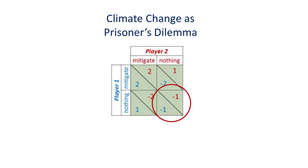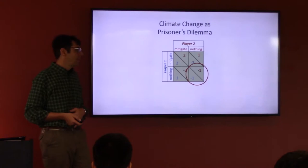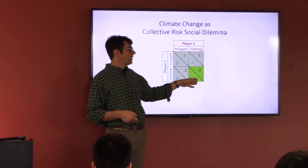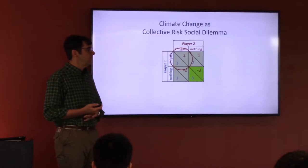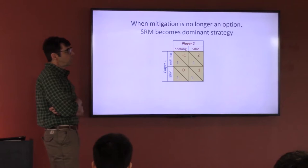But if one player mitigates and the other does nothing, it only partially solves the problem, and the country that mitigates has hampered their economy. If they both do nothing, they're both worse off. In the classic prisoner's dilemma, they end up in the suboptimal outcome even though the cooperative solution would have been better for society. The collective risk social dilemma increases the downside of doing nothing, changing the incentives such that both would be incentivized to mitigate.